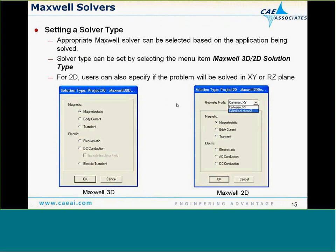When we start Maxwell, we can do a 2D or 3D analysis. In 3D, we can do magnetostatic, eddy current, transient, electrostatic, DC conduction, or electric transient analysis. In 2D, we can work in planar or axisymmetric modes and do the same kinds of analyses — magnetostatic, eddy current, transient, electrostatic, AC conduction, or DC conduction.